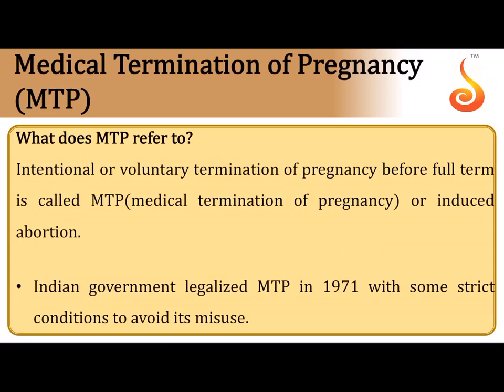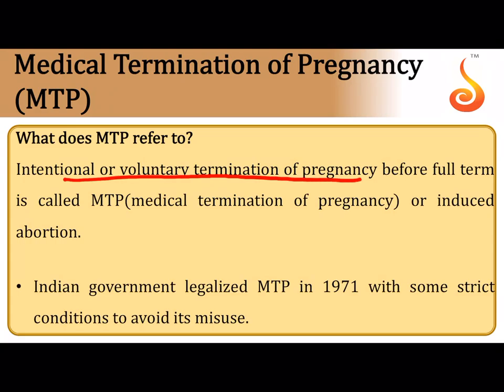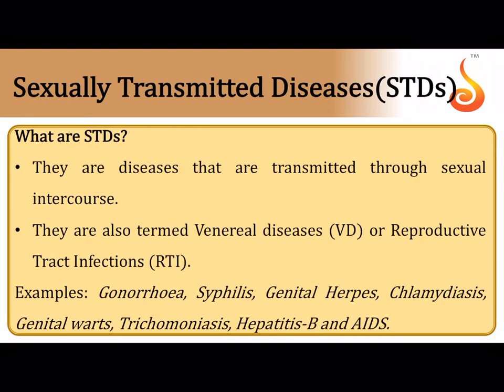Medical Termination of Pregnancy (MTP) is the intentional or voluntary termination of pregnancy before full term. The Government of India legalized MTP in 1971. MTP is necessary when the pregnancy is proving fatal to the mother or child, or to terminate unwanted pregnancies resulting from contraceptive failure or personal reasons of the couple.